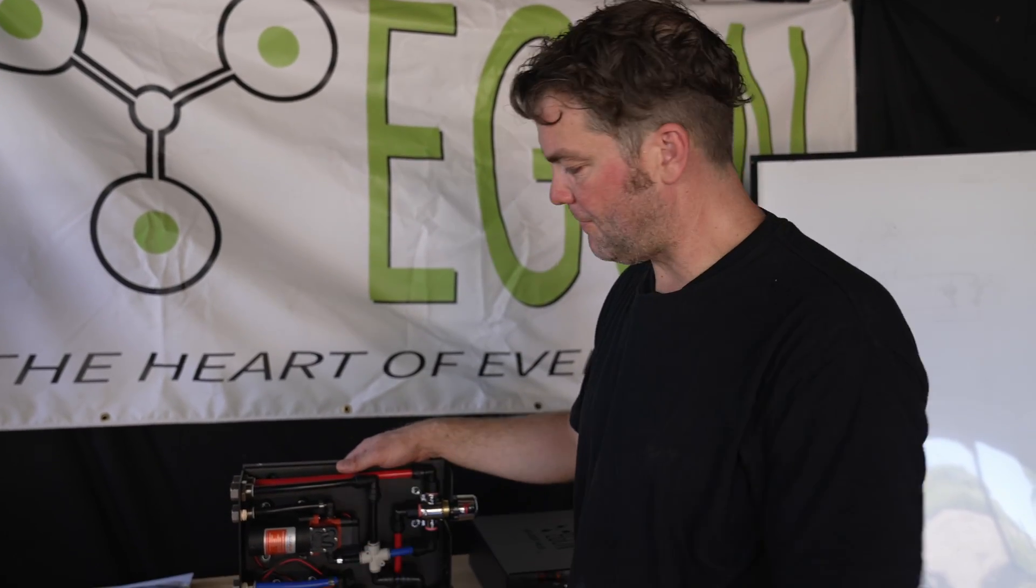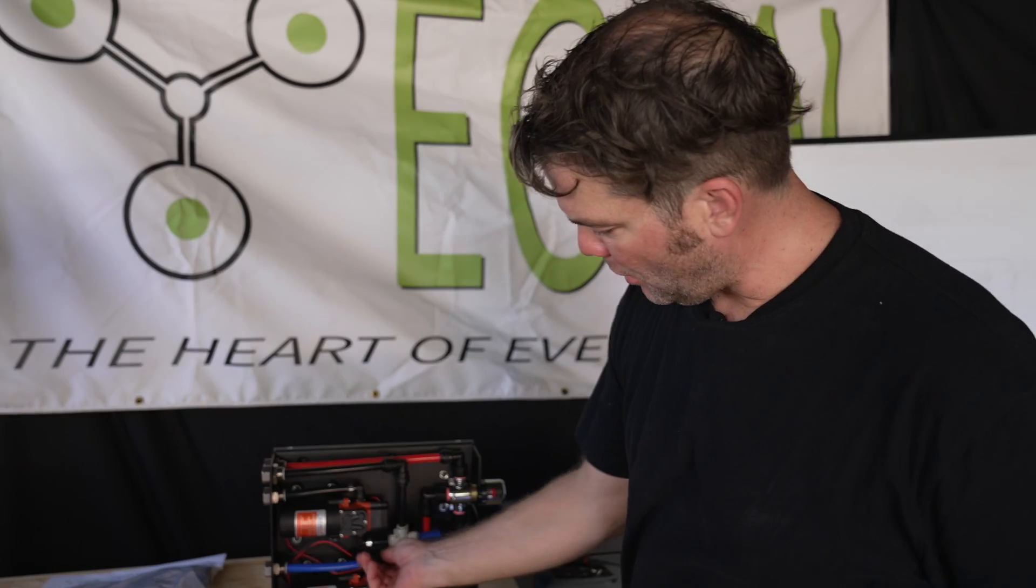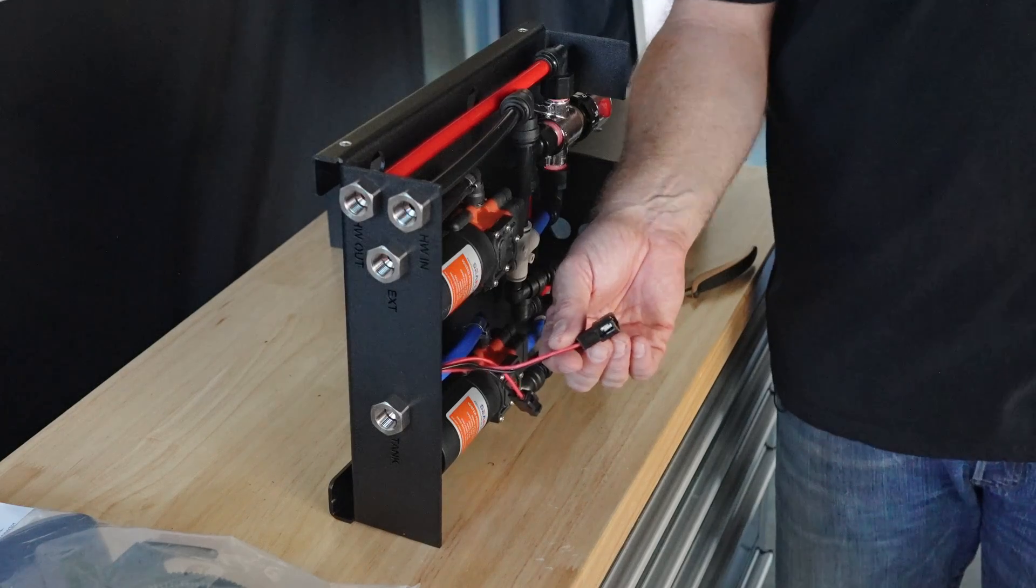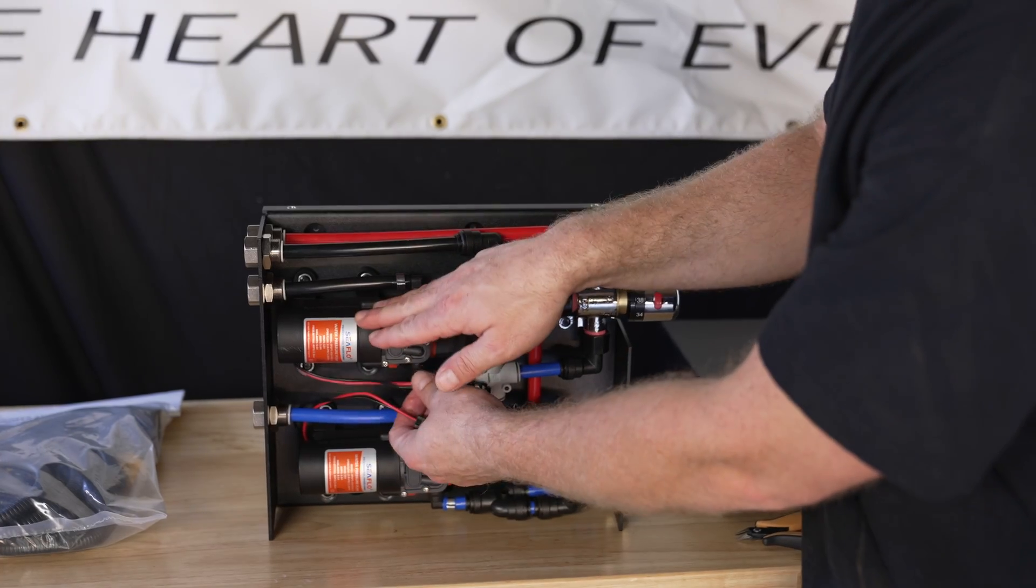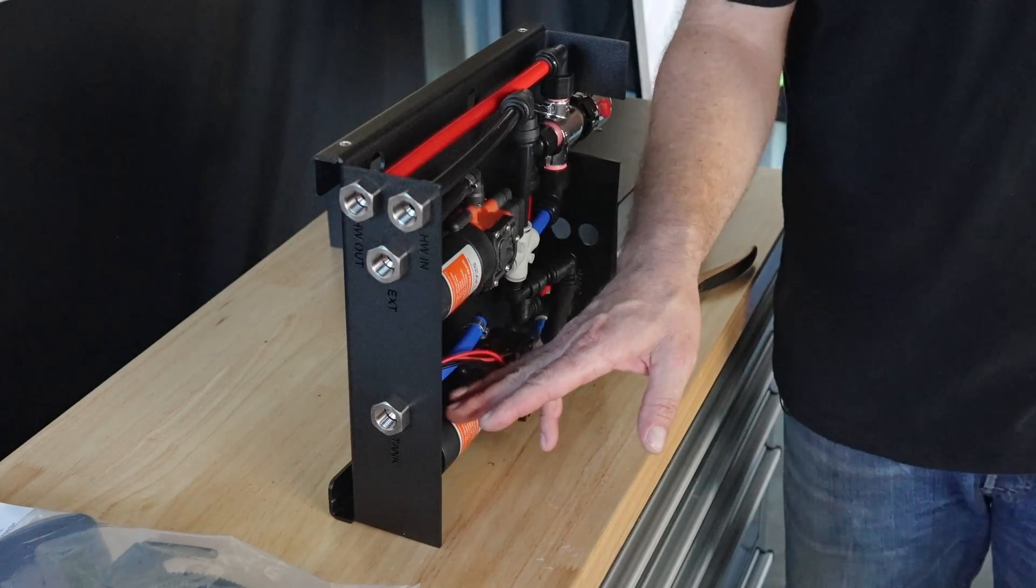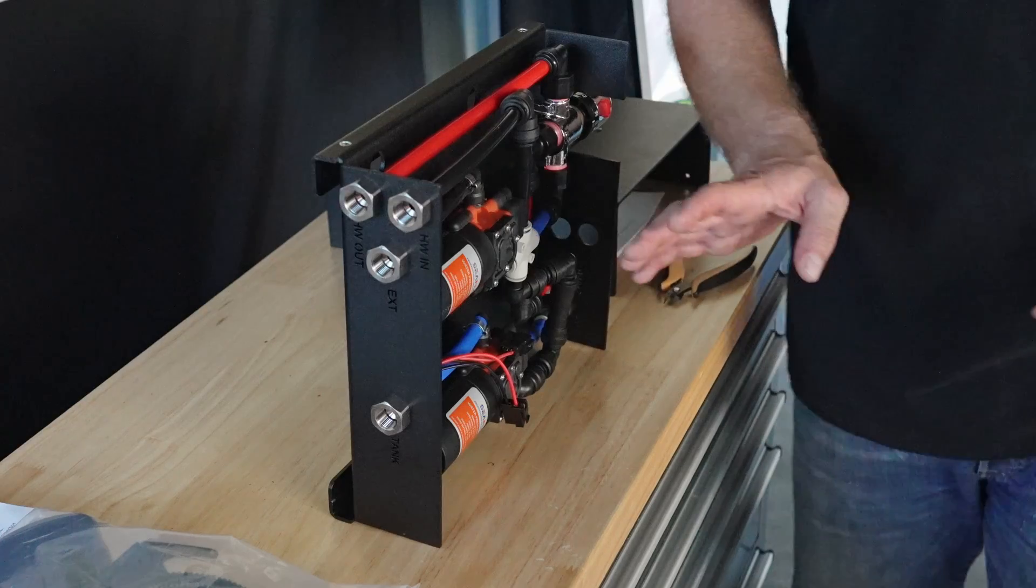Another thing you need to connect is the power supply for the pumps. There's two ways of doing that. If you install the water hub somewhere where it's not that easy to access and you'd rather have your switches somewhere else in the vehicle, all you need to do is connect power supplies that run through a switch to the pumps. The bottom one is the fresh water pump, the top one is the gray water pump. These draw about four amps so if you fuse the water hub with a 10 amp fuse that's more than enough.